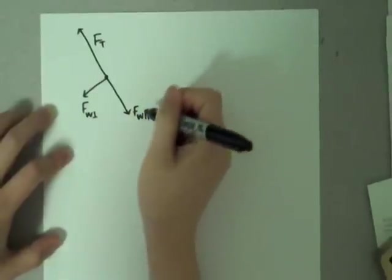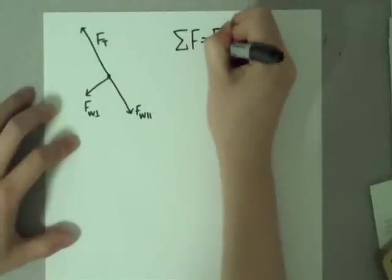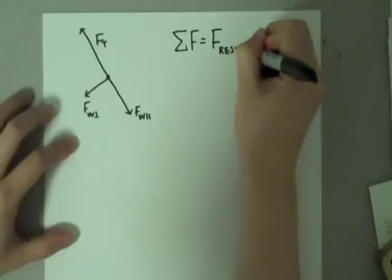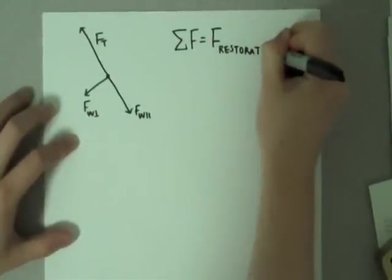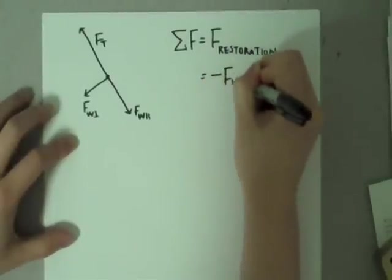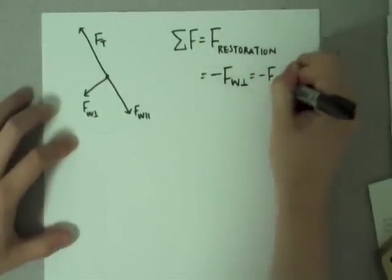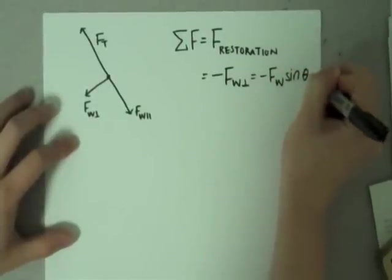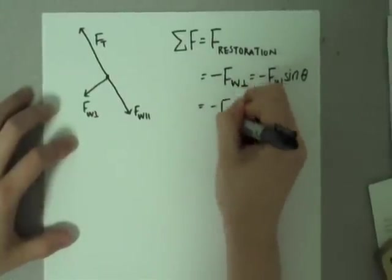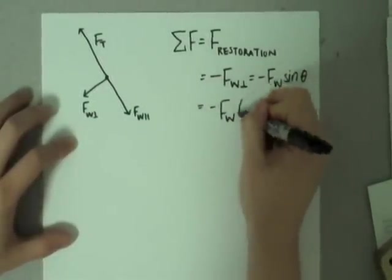For the purposes of this problem, we only care about force of weight perpendicular, because force of weight parallel and force of tension are negating forces. The force of weight perpendicular, or the sum of the forces, is basically the force of restoration. It's what pulls the pendulum back into equilibrium position and past the equilibrium position, and then back towards equilibrium, creating an oscillation. So we have the sum of the forces equaling the force of restoration, which equals negative force of weight perpendicular, equals negative force of weight times sin theta. It's negative because the force is trying to pull it back from its current traveling direction.